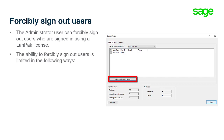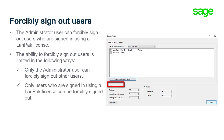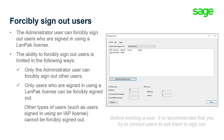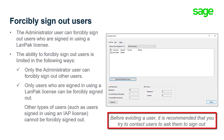The ability to forcibly sign out users is limited in the following ways. Only the administrator user can forcibly sign out other users. Only users who are signed in using a LAN Pack license can be forcibly signed out. Other types of users, such as users signed in using an IAP license, cannot be forcibly signed out. Before evicting a user, it is recommended that you try to contact users to ask them to sign out.